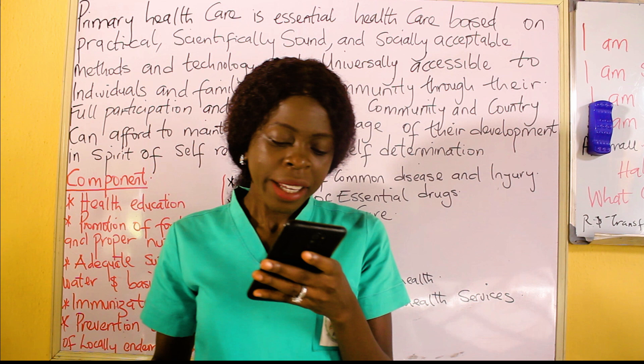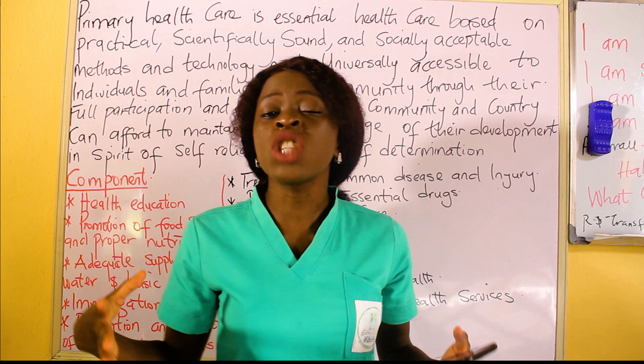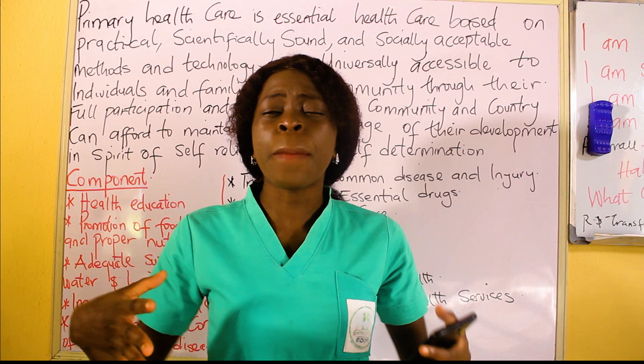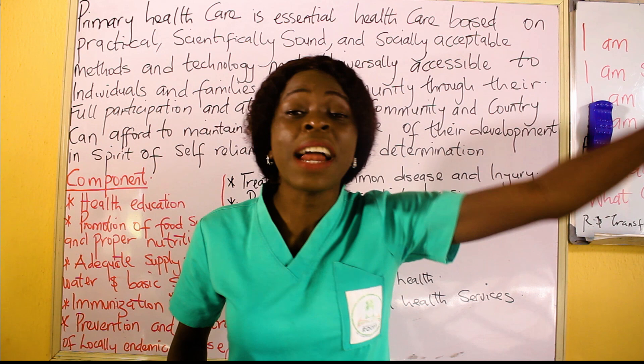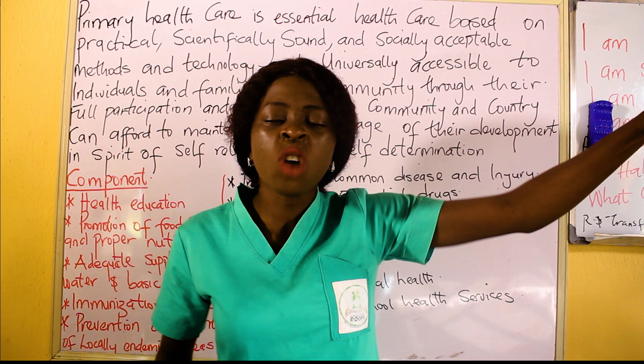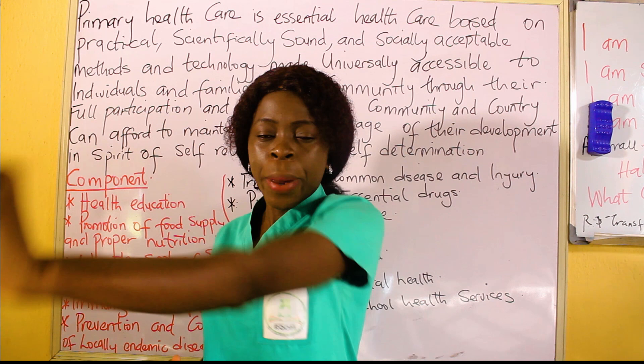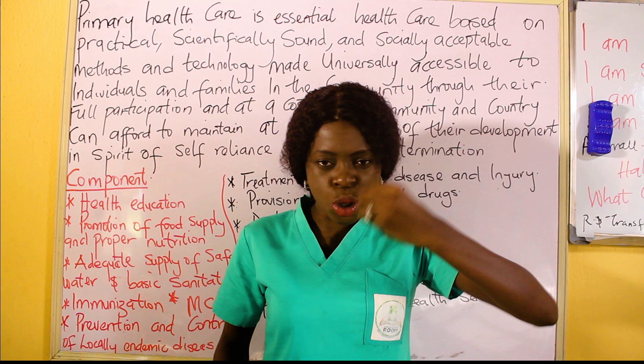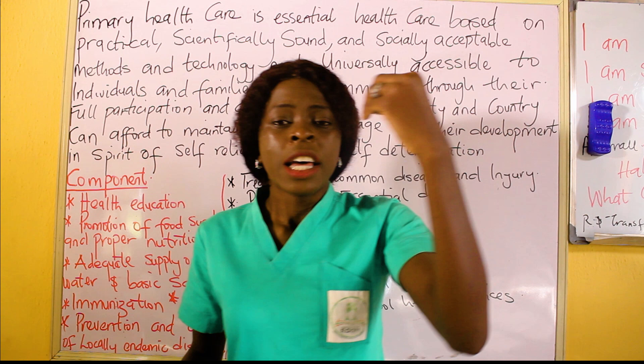The third principle is intersectoral collaboration. It is not just about health, infusions, and medication. It involves collaborating health with the food people eat, with various sectors — engineering, food supply, architectural sectors — to help them improve their living conditions. You find out the community's challenges and tackle them holistically, not just treating malaria but also addressing emotional and community problems.